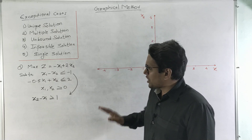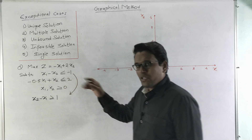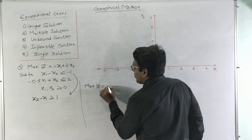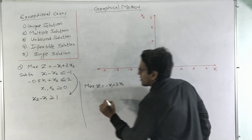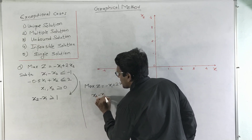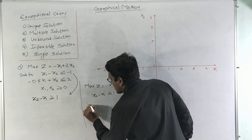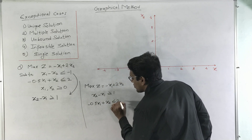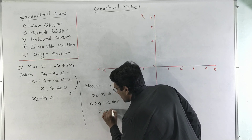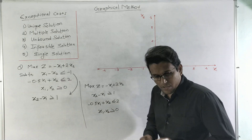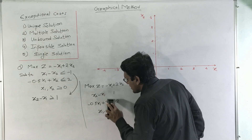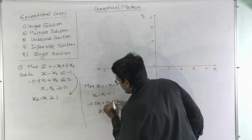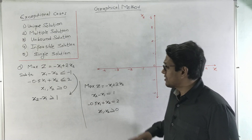The second prerequisite is to convert the inequalities into equations. So our reformulated problem is: maximize z equals minus x1 plus 2x2, subject to x2 minus x1 greater than or equal to 1, and minus 0.5x1 plus x2 less than or equal to 2, with x1, x2 greater than or equal to 0. We now convert these inequalities into equations.